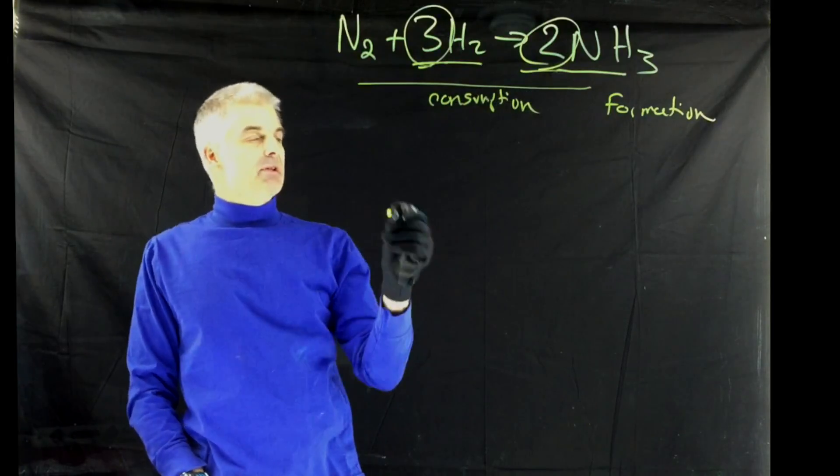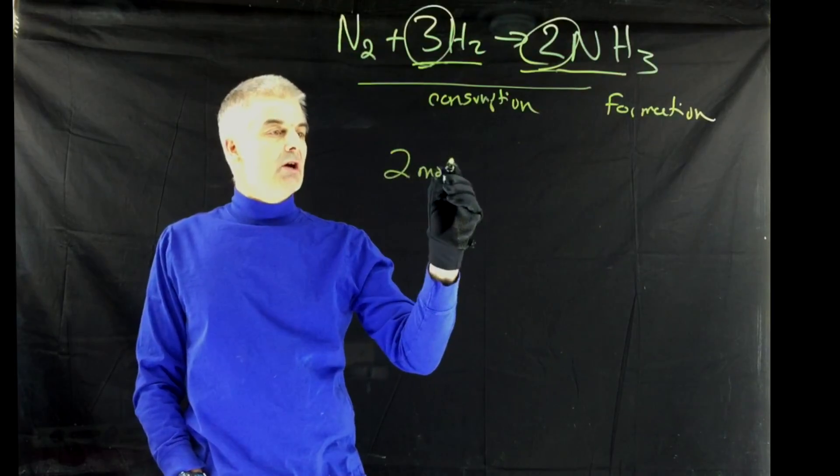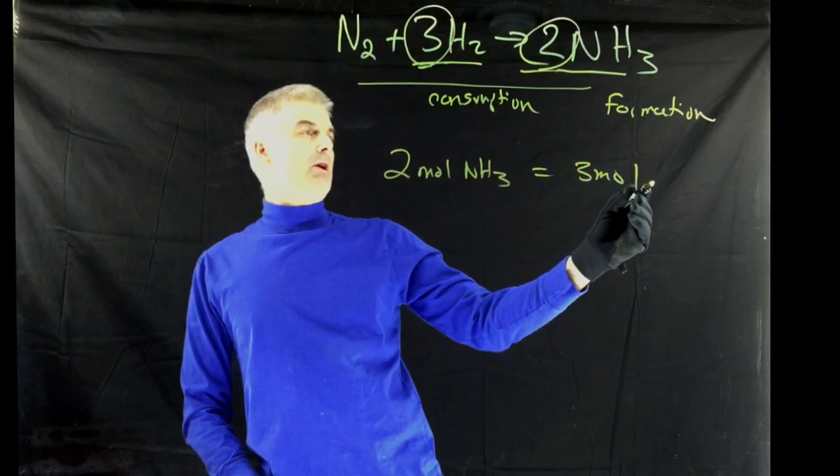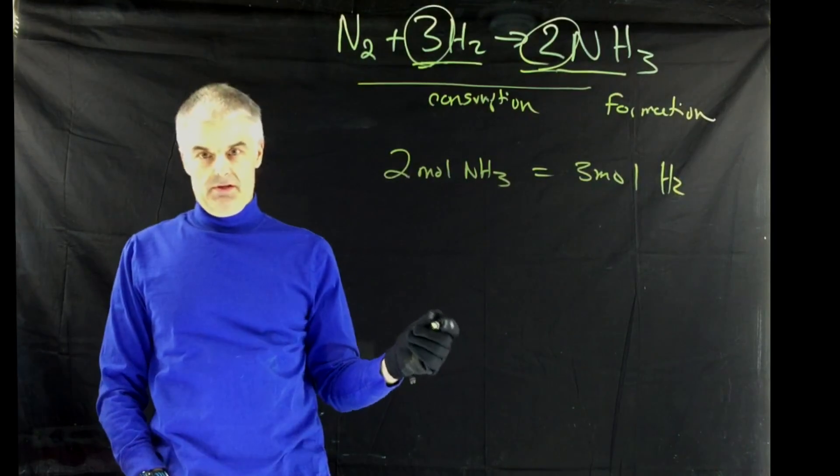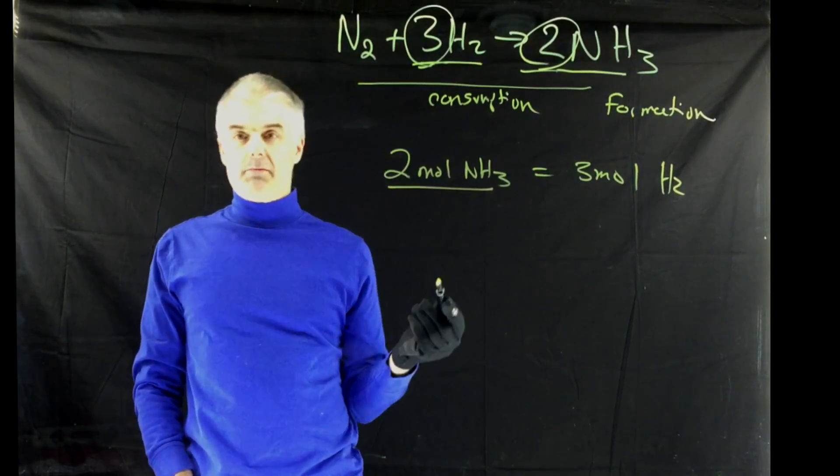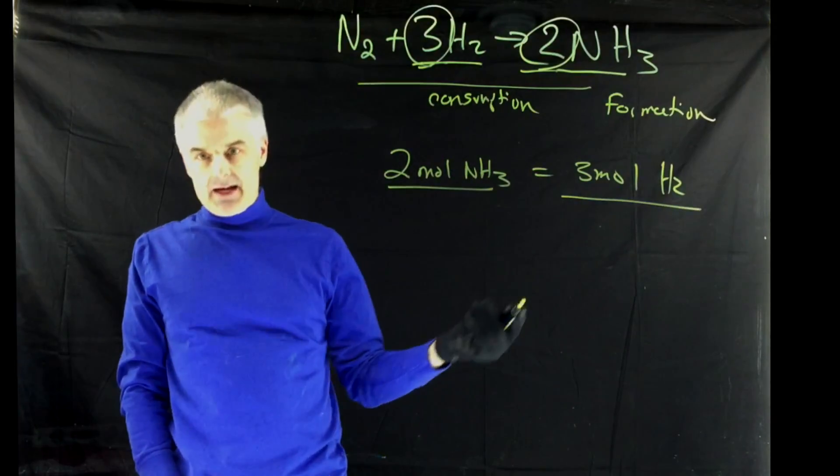What's going to happen is ammonia is going to produce two moles of ammonia for every three moles of hydrogen that is consumed. So ultimately, this is really a very simple question. Two moles of ammonia are produced for every three moles of hydrogen consumed.